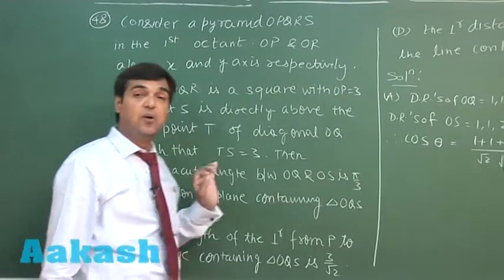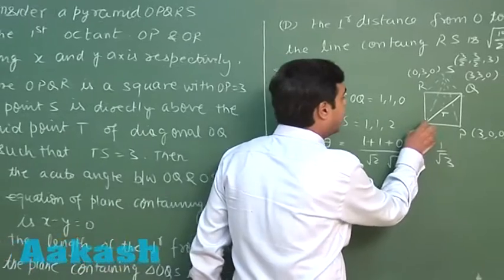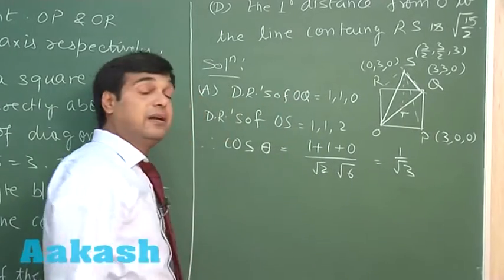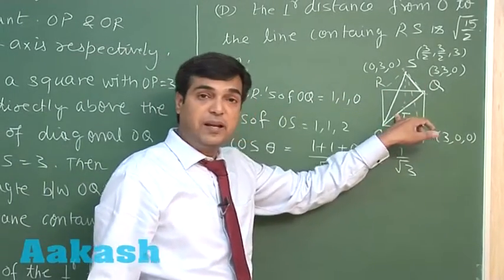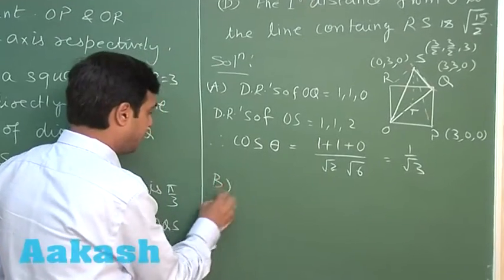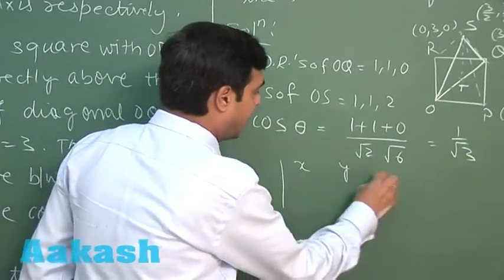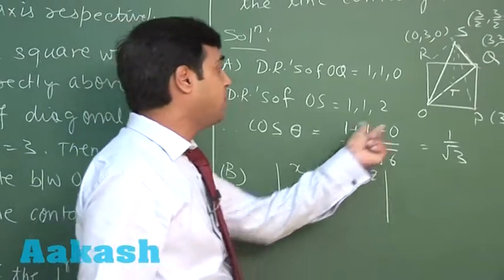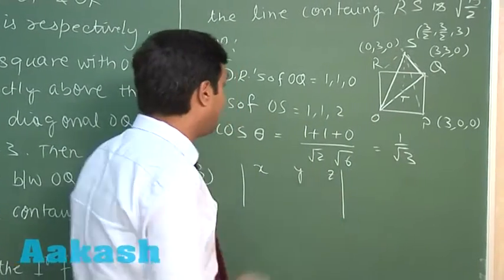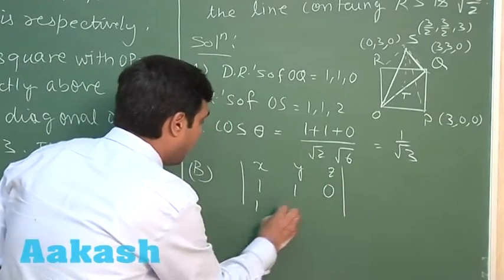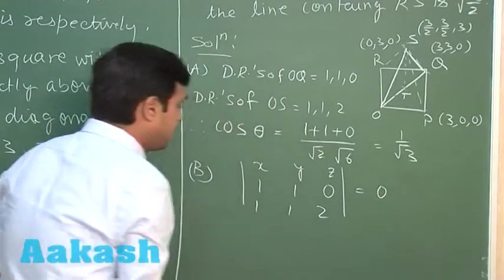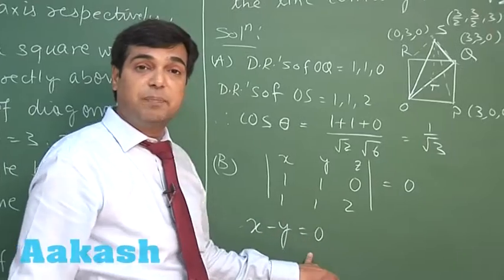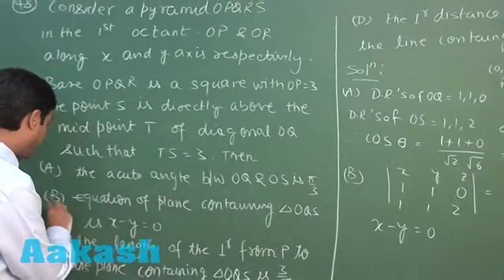For option B, we find the equation of the plane containing triangle OQS. Using the normal vector from cross products of direction ratios of OQ (1,1,0) and OS (1,1,2), and passing through origin, we get the equation x − y = 0. So option B is correct.